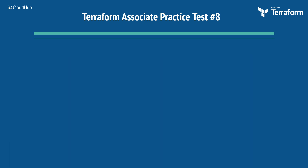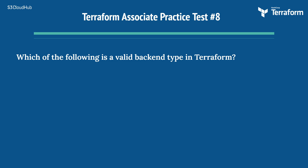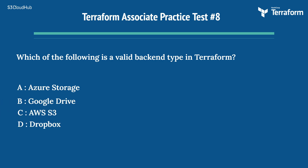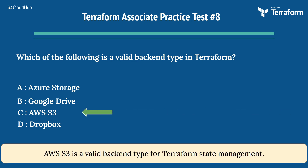The eighth question: which of the following is a valid backend type in Terraform? Options are: A) Azure Storage, B) Google Drive, C) AWS S3, D) Dropbox. The right answer is Option C, AWS S3. AWS S3 is a valid backend type for Terraform state management.